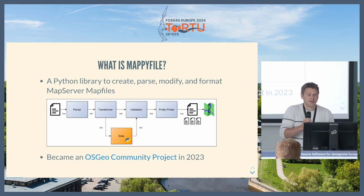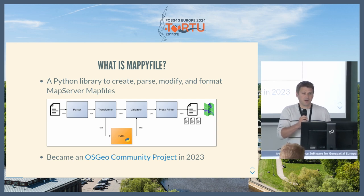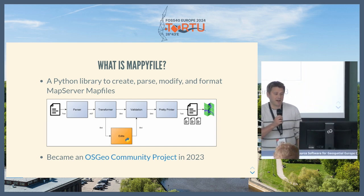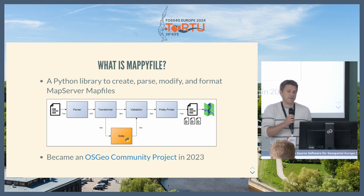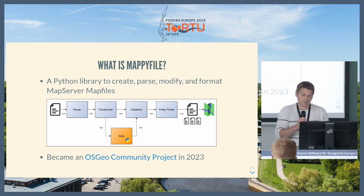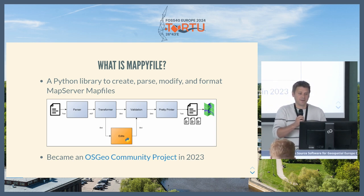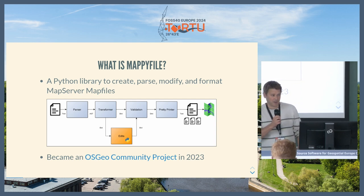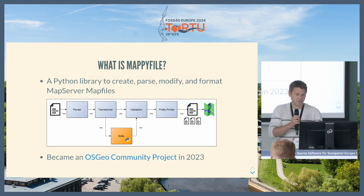It basically parses the map file and turns it into a Python dictionary structure. From that structure, you can then edit it, you can validate it, and then you can dump it back out to a map file. So it's a kind of full round trip of reading map files, editing them using Python dictionaries, and then dumping it back out.